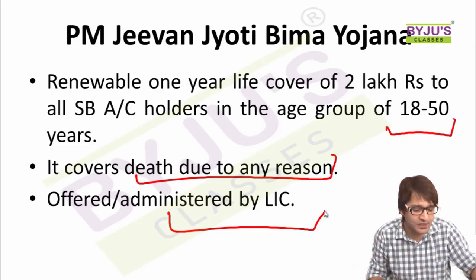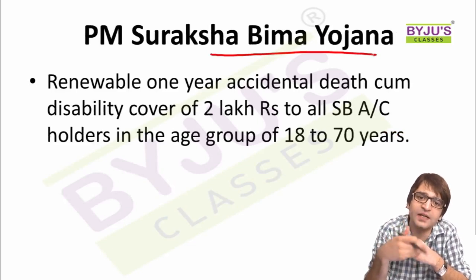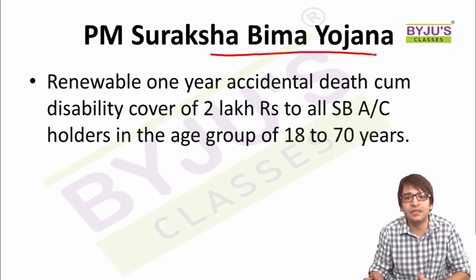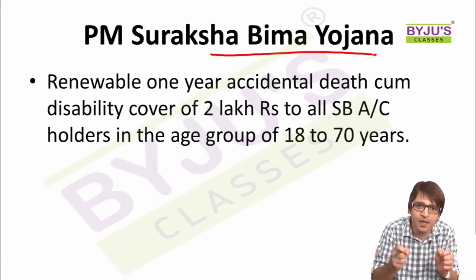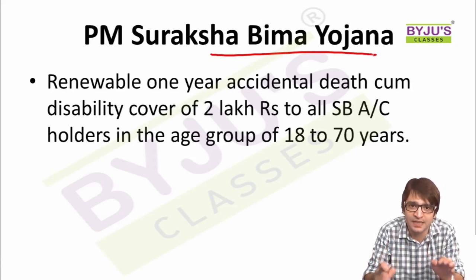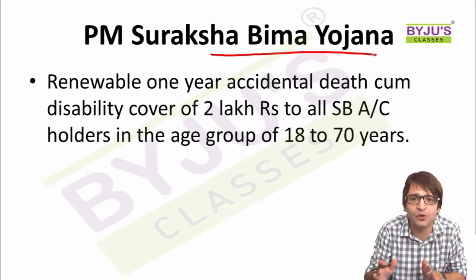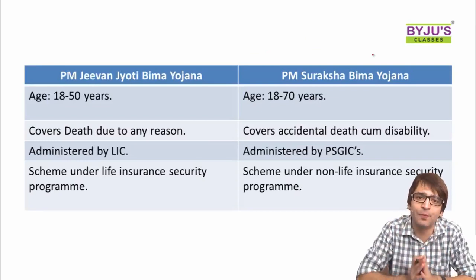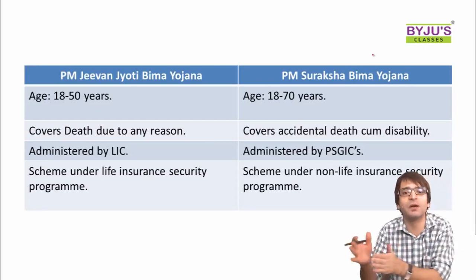The second insurance scheme is Pradhan Mantri Suraksha Bima Yojana — also a one-year renewable scheme. If you are aged 18 to 70 years, you pay a specific premium and receive insurance cover of 2 lakh rupees. Let's now distinguish clearly between these two schemes.